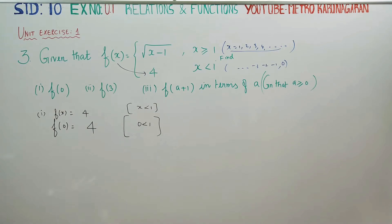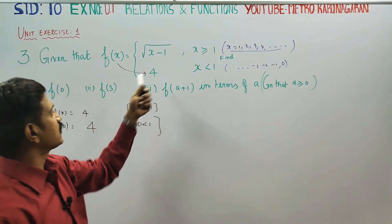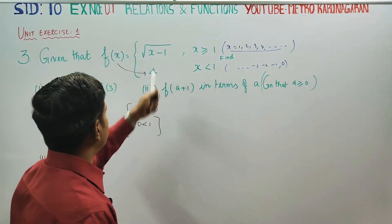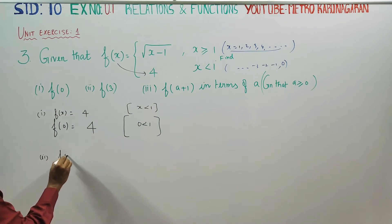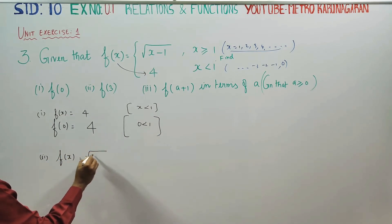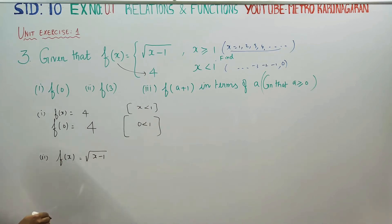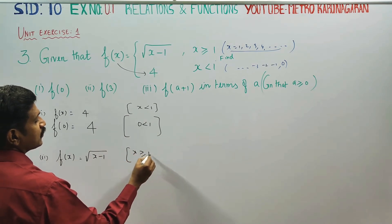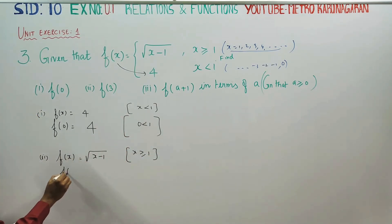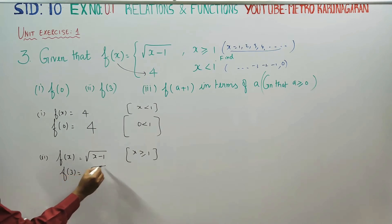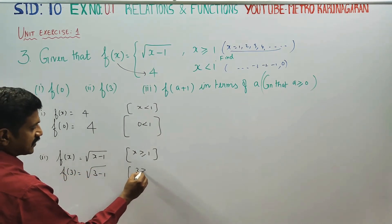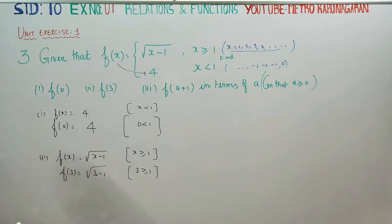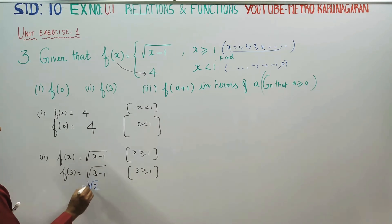The second part is f of 3. Since 3 is greater than or equal to 1, we use the formula f of x equals square root of x minus 1. Substituting x equals 3: f of 3 equals square root of 3 minus 1, which gives root 2. This is the second answer.